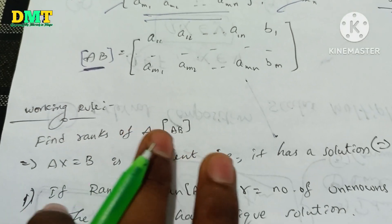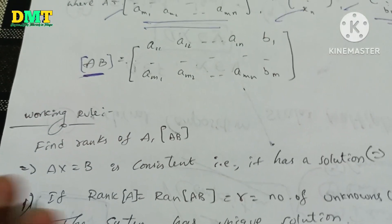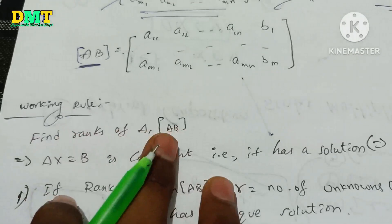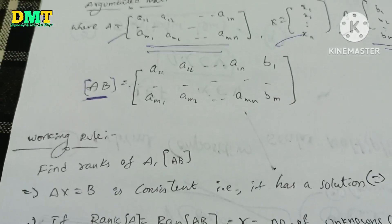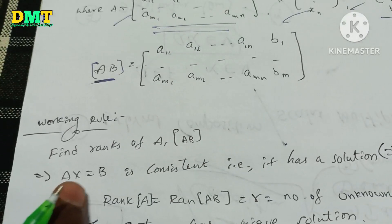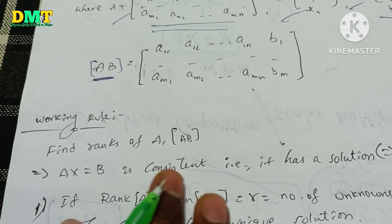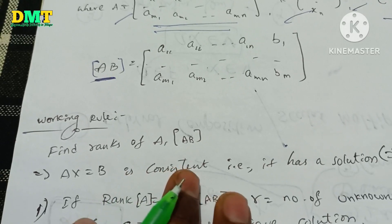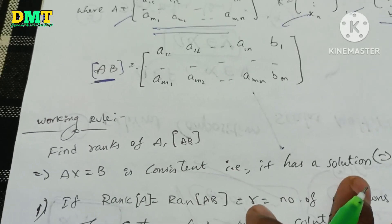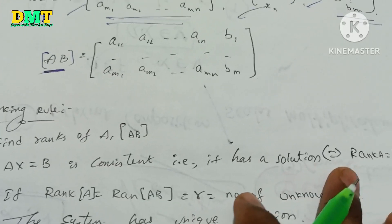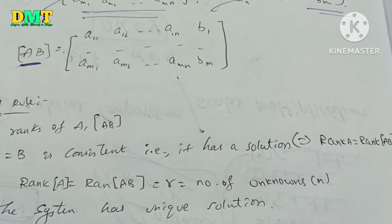We have a working rule. We will find that AX equal to b is consistent. Therefore, we will find rank A is equal to rank [A|b].